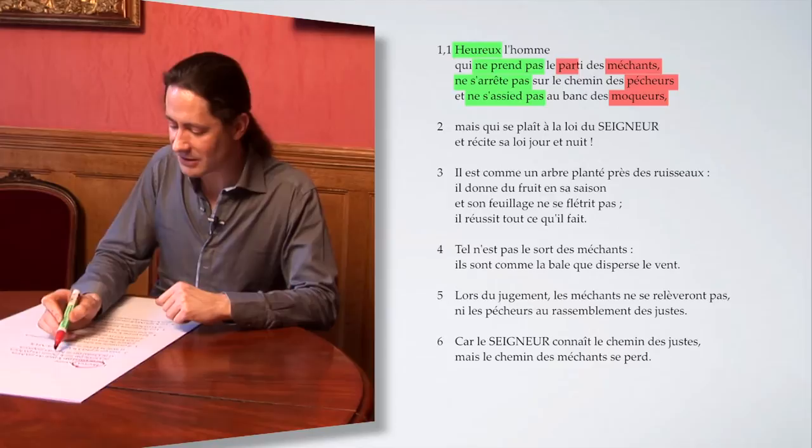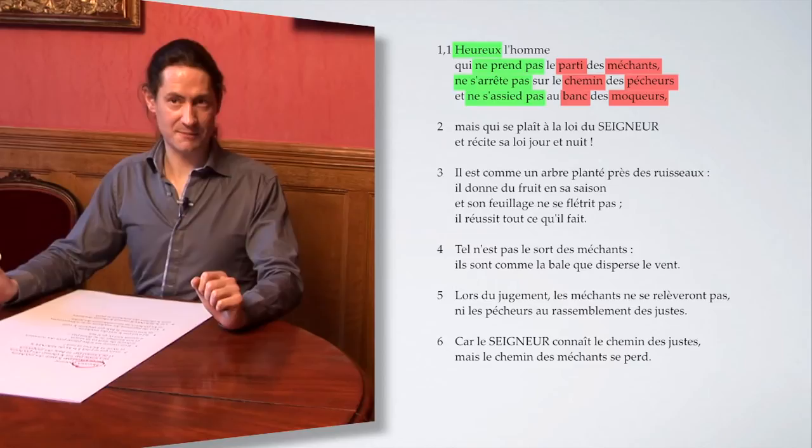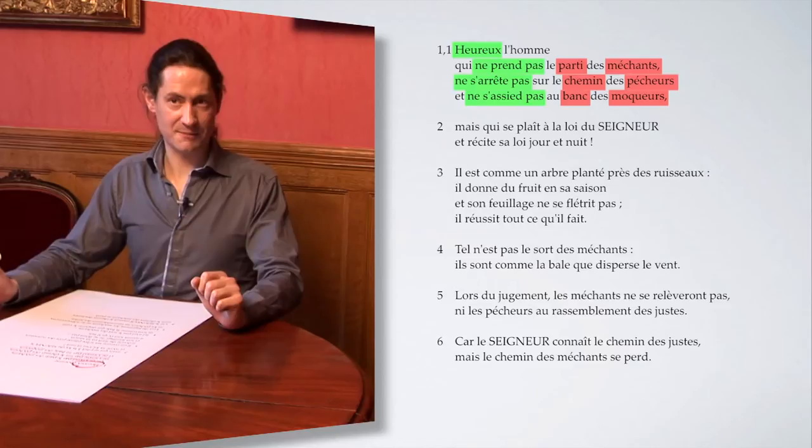Et ceci est souligné par l'emploi de trois termes, là encore parallèles : partis, chemins et bancs. Voici donc le premier élément du bonheur, se dépourvoir de toute forme de mal.